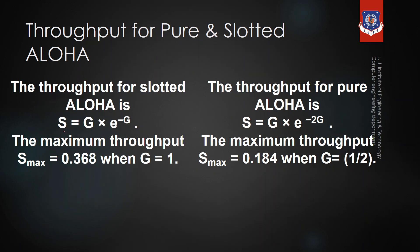The throughput equation for slotted Aloha is S = G × e^(−G), and for pure Aloha it is S = G × e^(−2G). You need to remember these equations; the detailed explanation will be covered in another video. If you have any doubts, you can ask in the comment section. Thank you for today's session.